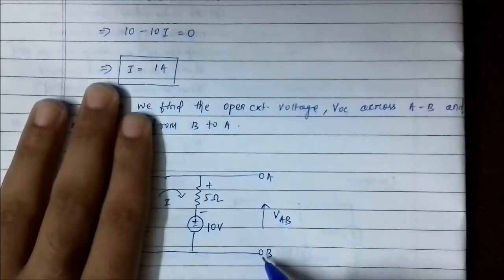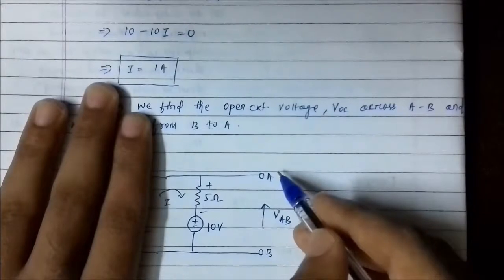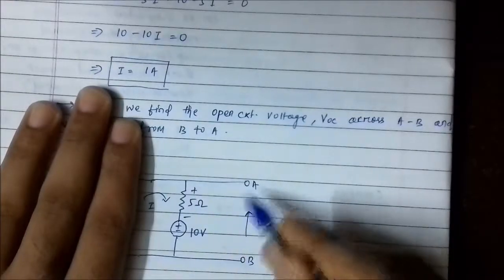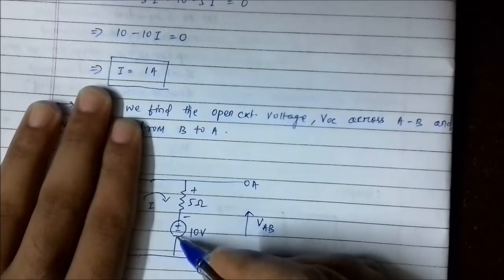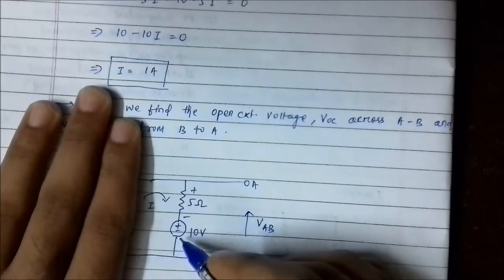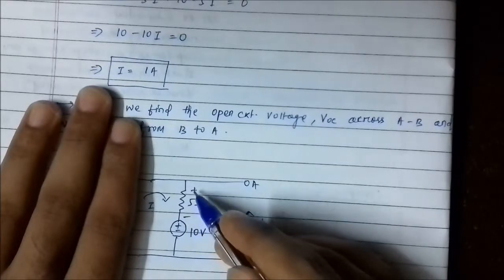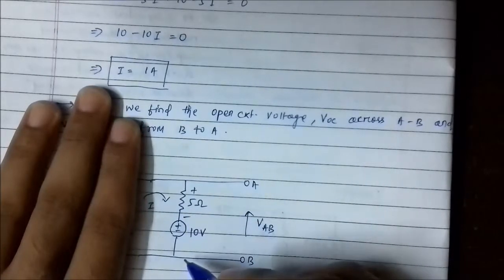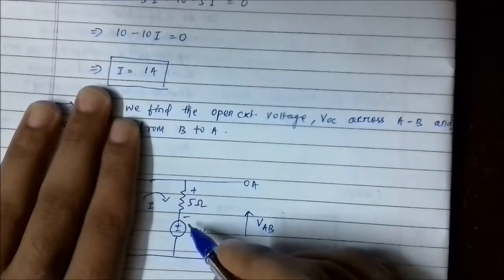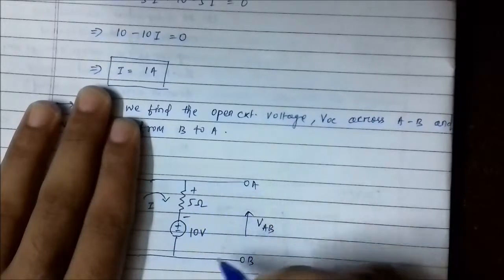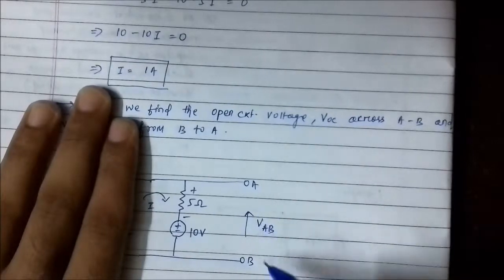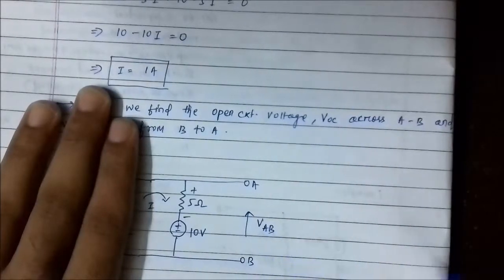Continuing to move from B to A: we are moving from negative to positive polarity of the 10-volt source, so we take it as positive. Again, we are moving from negative to positive polarity of the impedance, with current I = 1 ampere flowing through it, so we add plus 5I. The expression is 10 + 5I. Substituting I = 1 ampere, V_AB = 10 + 5(1) = 15 volt. That is the open circuit voltage, which is the Thevenin voltage.